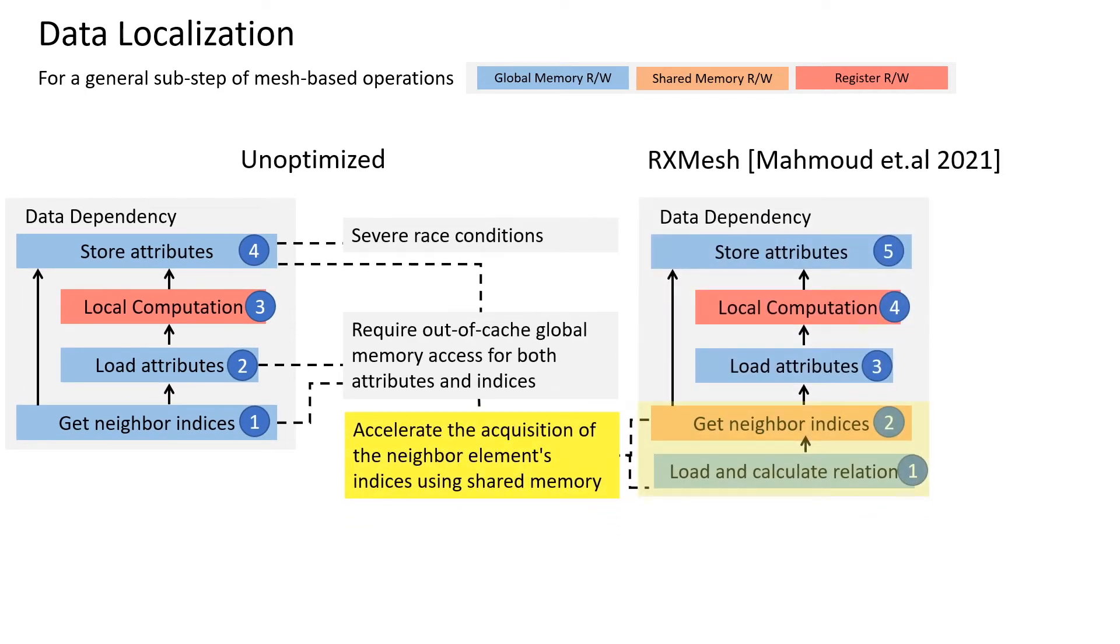RxMesh is a state-of-the-art GPU mesh library that accelerates the acquisition and computation of the neighbor indices using shared memory. But serving as a library, RxMesh leaves the attribute access global and unoptimized.